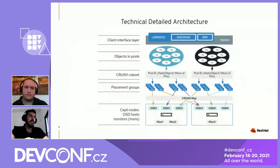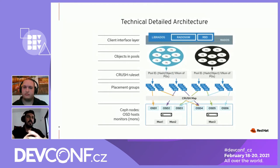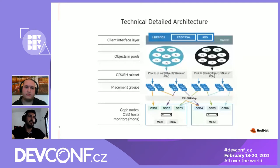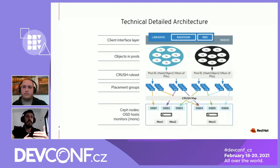Diving deeper into Ceph's architecture, Ceph is a software-defined storage solution, which means each component is actually a piece of software. All the software pieces are eventually interacting with each other in the cluster, giving us the main clusterized experience when managing Ceph. Looking at the components, we have two major components: the mons, which are responsible for authentication and cluster management, and the OSDs, which are responsible for storing the actual data. Each component is represented mostly as systemd services or in the latest versions of Ceph, containers as well.